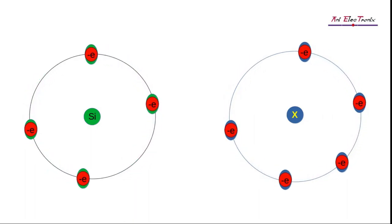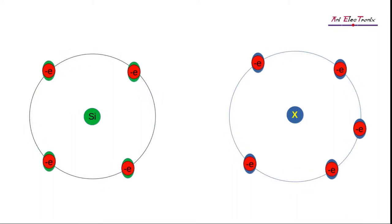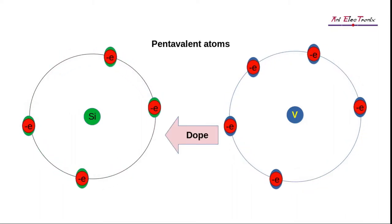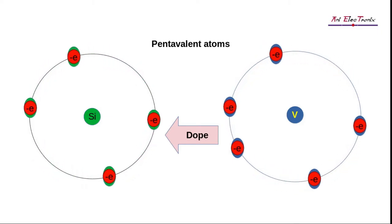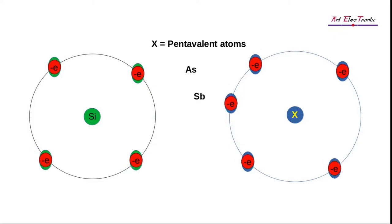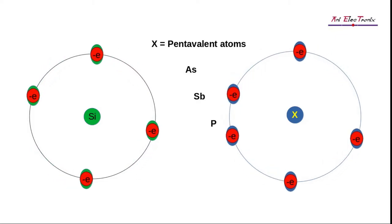These electrons are called donor impurities. A pentavalent element is doped inside the pure silicon crystal to increase the number of electrons. Examples of pentavalent atoms are arsenic, antimony, and phosphorus.